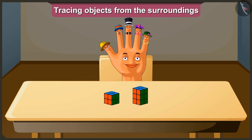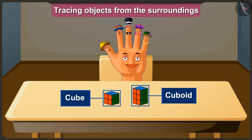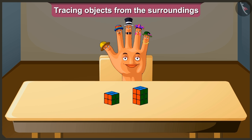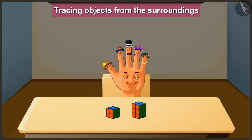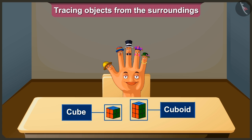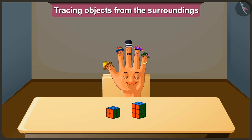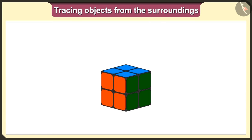Hey Tolman, look — this is a cube-shaped toy and this is a cuboid-shaped toy. Now tell me, which shape would we get when we trace these cube and cuboid-shaped toys? Let's keep these toys on a paper and trace them.